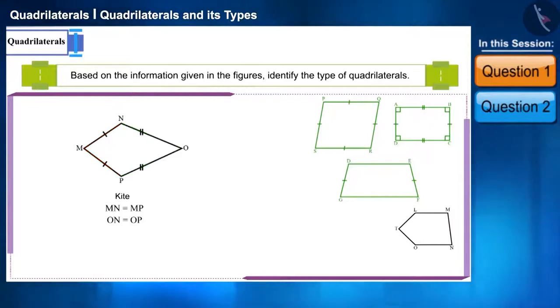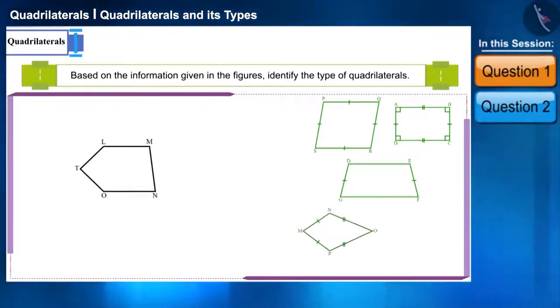Look at the fifth figure. On observing this you will know that it is not a quadrilateral because it has five sides. We can also call it a polygon or a pentagon.